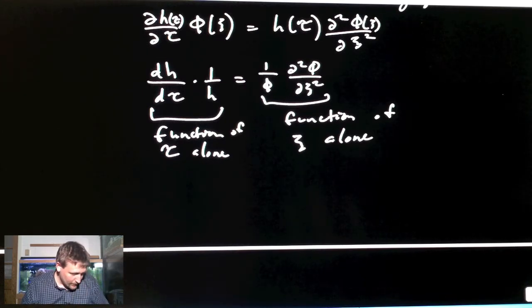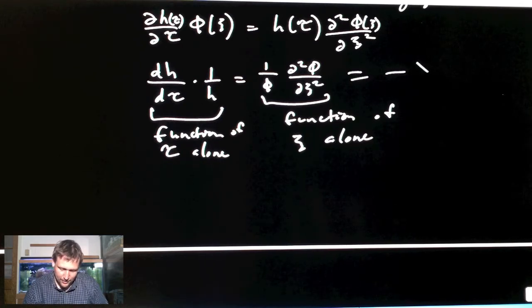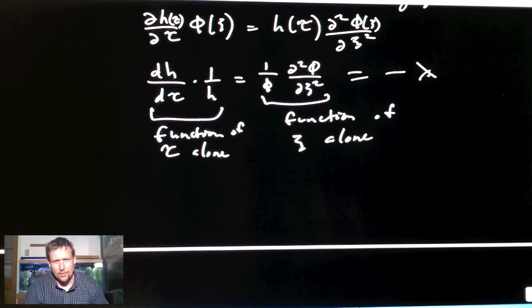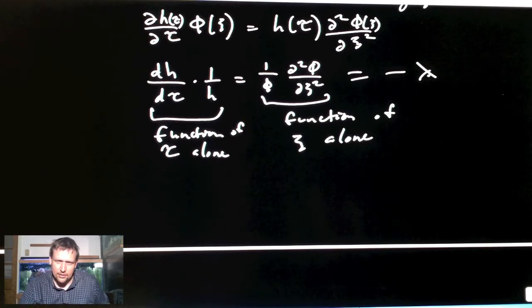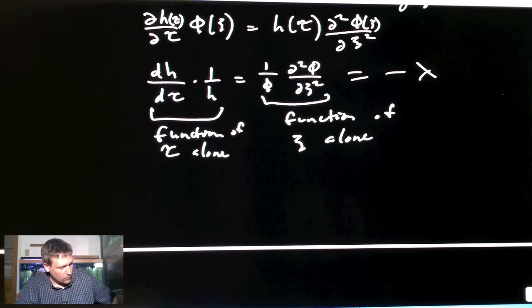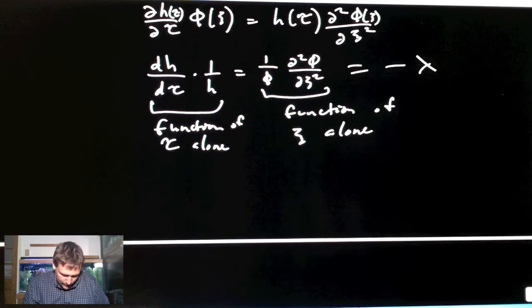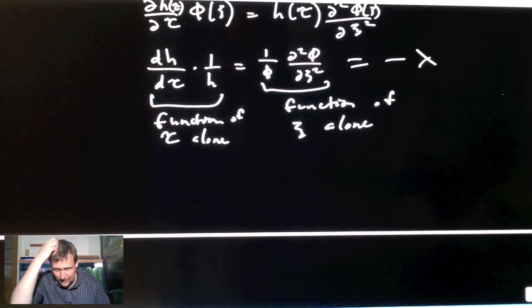Let's make this constant for this problem minus λ. Obviously giving it a minus sign because it helps things in the future, and λ is going to eventually be the eigenvalue for the solution. This equals minus λ. We have to consider what λ might be—it could be positive, negative, or zero.